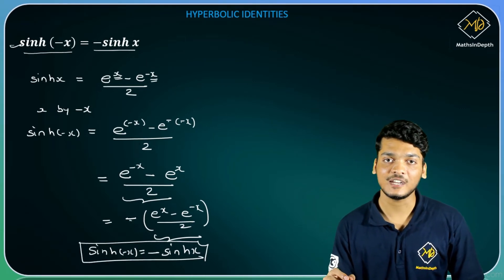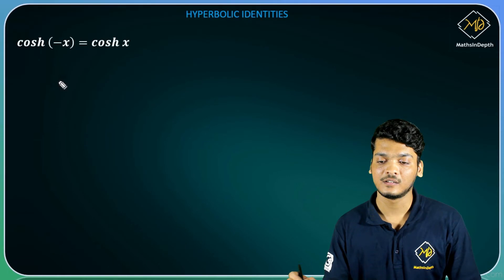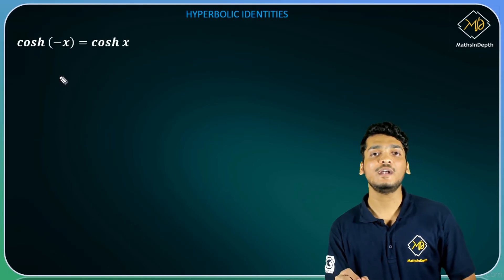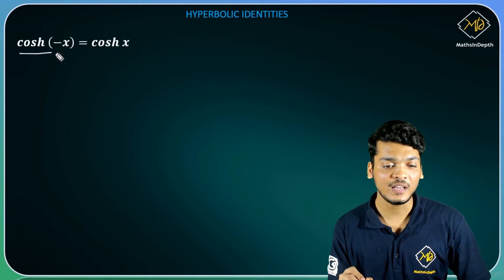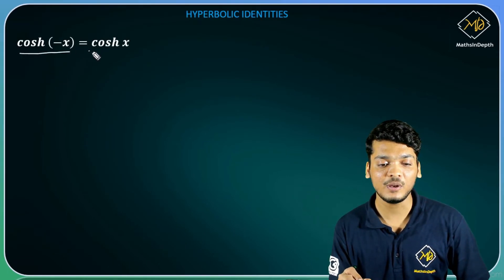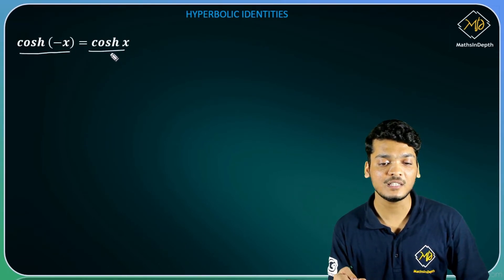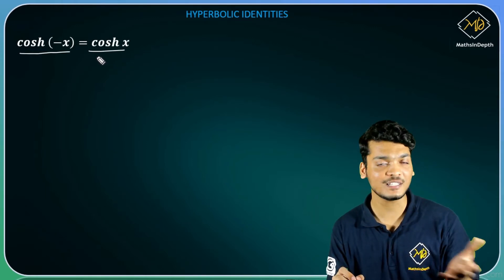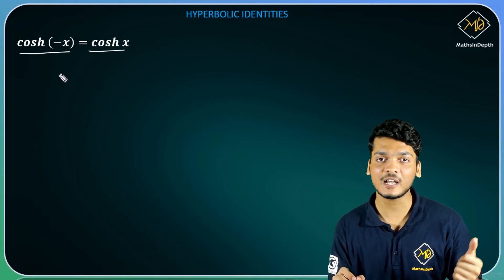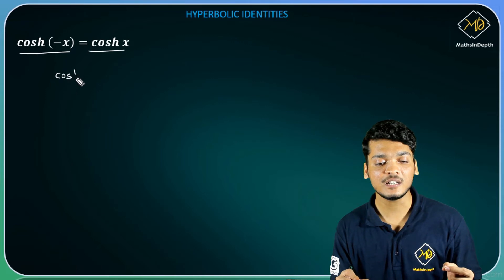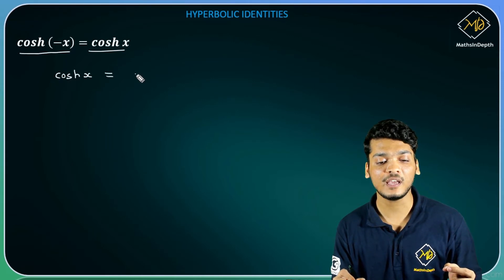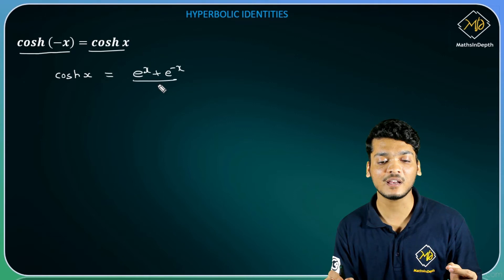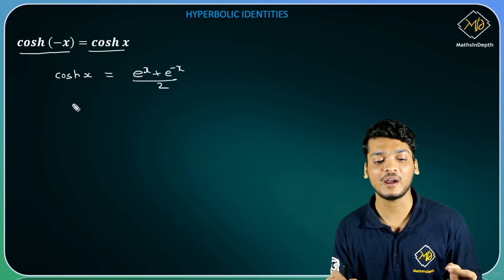So let's see the next identity. Next identity mein mujhe prove karna hai cosh(-x) is equal to cosh(x). Ise bhi hum similarly prove karenge jaise humne previous identity ko prove kiya. So let's consider the definition of cosh(x): e raise to x plus e raise to minus x divided by 2.